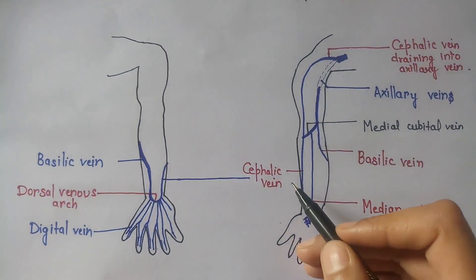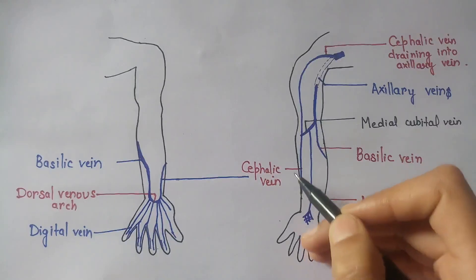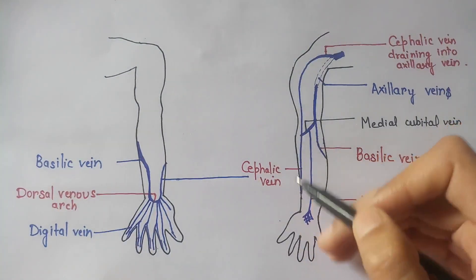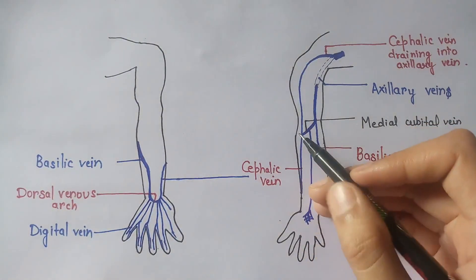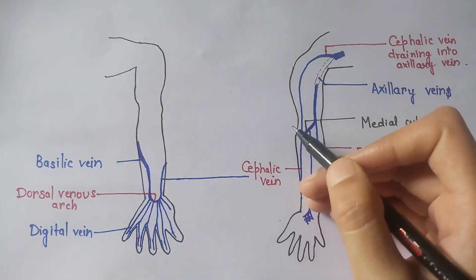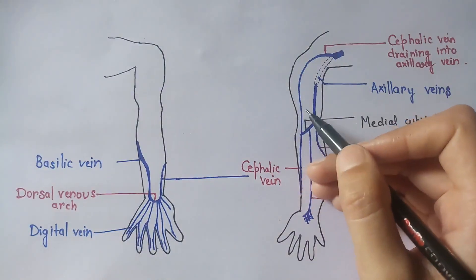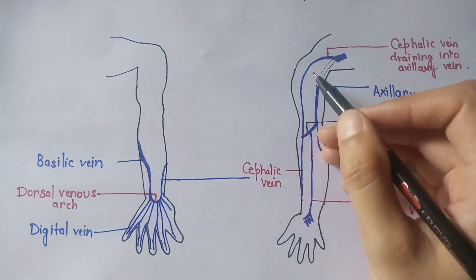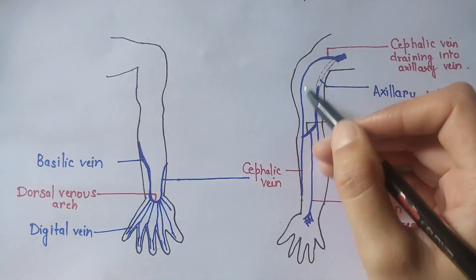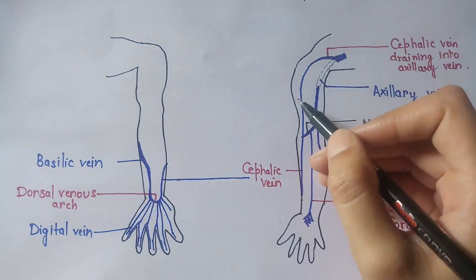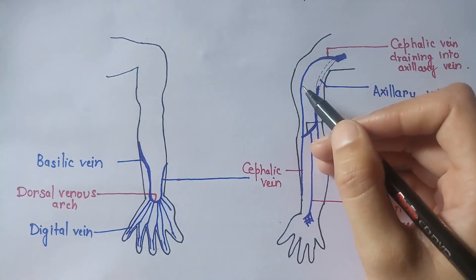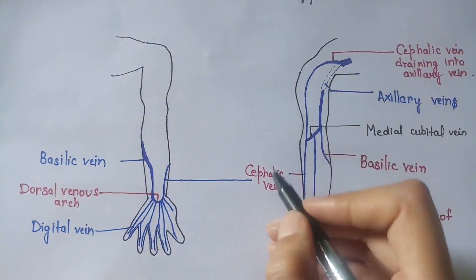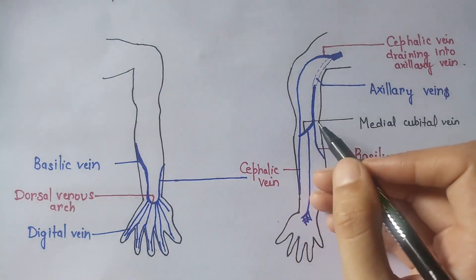The cephalic vein runs upward and comes to the front of the limb, then runs upward along the lateral border of biceps brachii. It then runs in the infraclavicular fossa and pierces through the clavipectoral fascia.